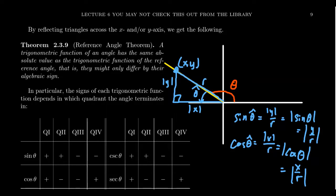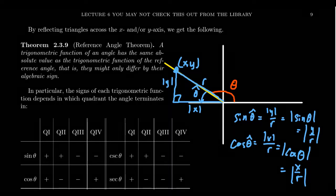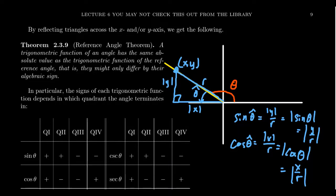So ignoring the algebraic sign (plus or minus), the sine and cosine of the reference angle will be the same as sine and cosine of the given angle. That's also true for tangent, cotangent, secant, and cosecant as well. And this is not just true for the second quadrant — it holds for the third and fourth quadrants too. Even if your angle is larger than 360 or less than zero degrees, we can use reference angles to compute trigonometric ratios. Therefore, right triangle trigonometry extends to any angle measure whatsoever, as long as we use reference angles.